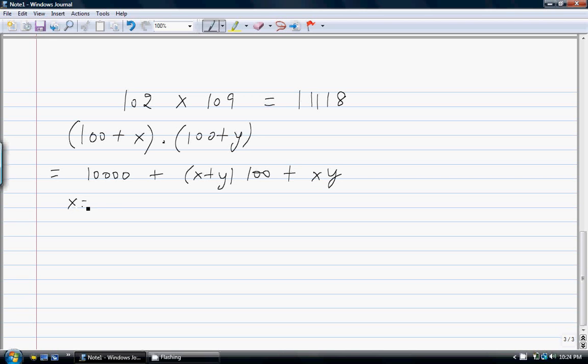So if I substitute x is equal to 2 and y is equal to 9, then I have 10,000 plus 1100 plus 18. So that will give me 11118.